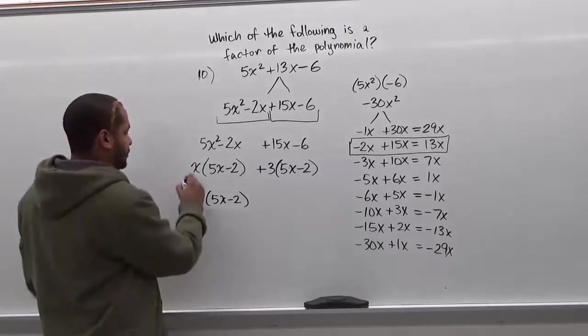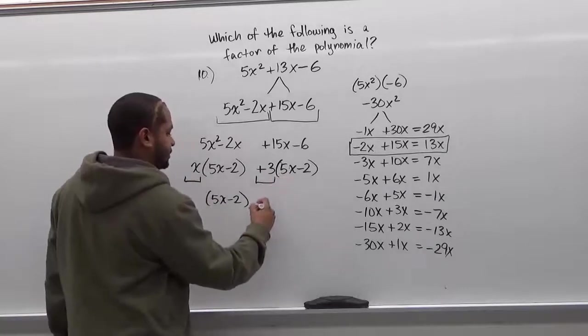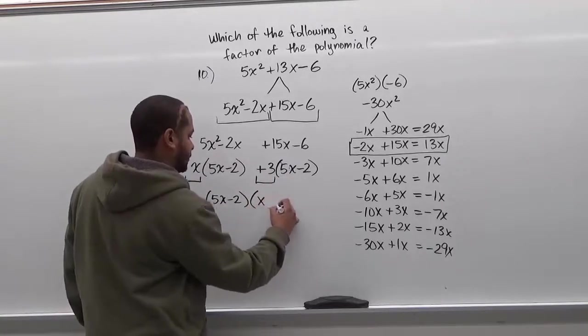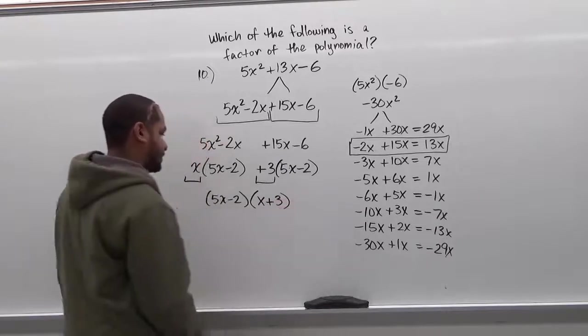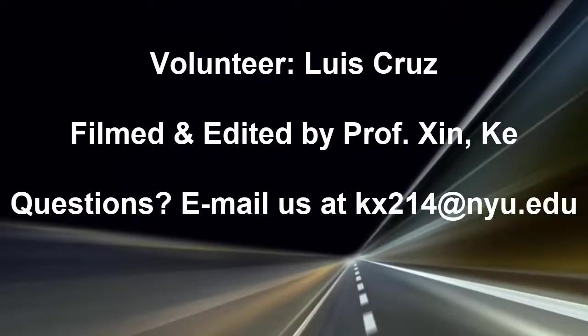And the two terms in the front that are left in front of the 5x minus 2, we're going to put in another set of parentheses following the 5x minus 2. So we'll get x plus 3 in the second set. Now this is it for the factoring. Thank you.